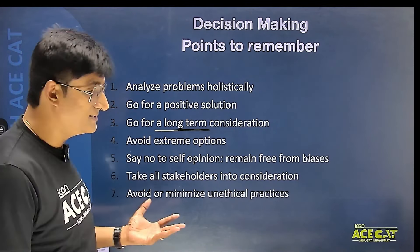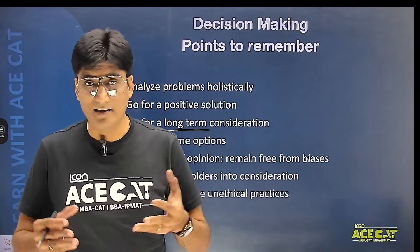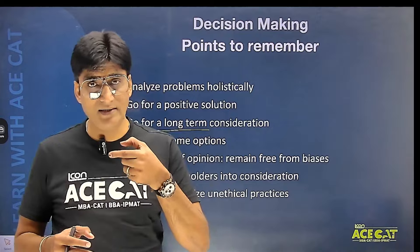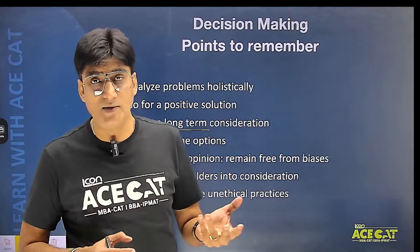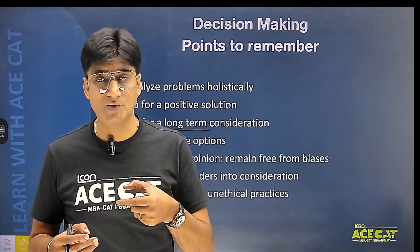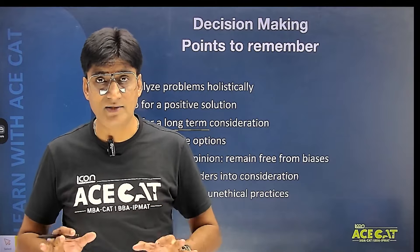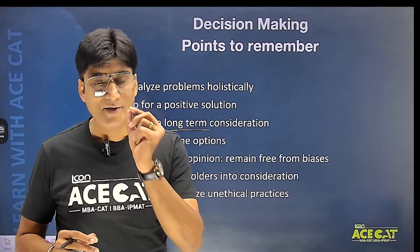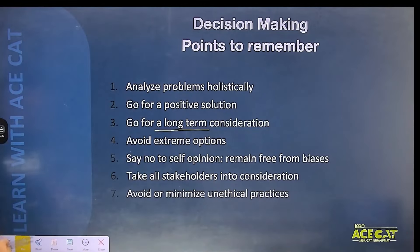Some questions present ethical dilemmas where two options are there and we are not able to decide what has to be done, because it becomes a question of ethics and morality. In such ethical dilemmas, we have to ensure we opt for options where we are trying to remain least unethical. Where we can be ethical, we will try to be ethical. So the ethical answer is going to be correct.